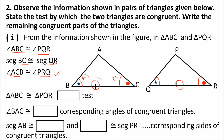Now we write the remaining congruent parts. Angle BAC is congruent to angle QPR because they are angles of congruent triangles. Side AB is congruent to side PQ as they are sides of congruent triangles. Side PR is congruent to side AC because they are sides of congruent triangles.